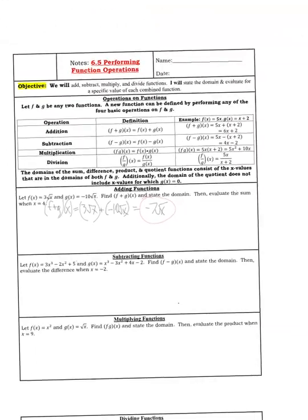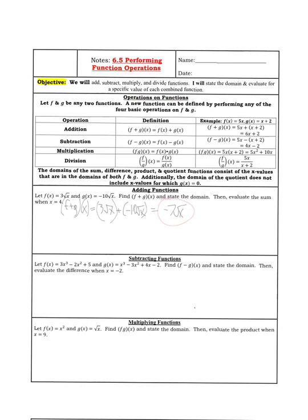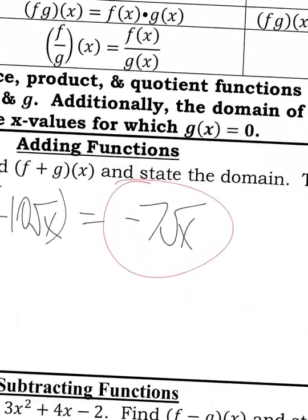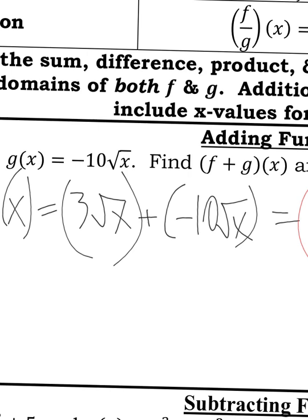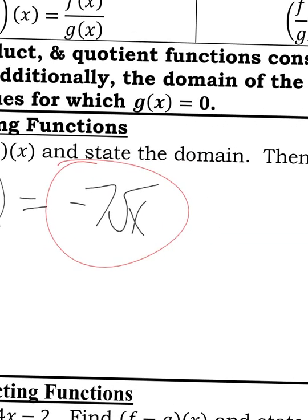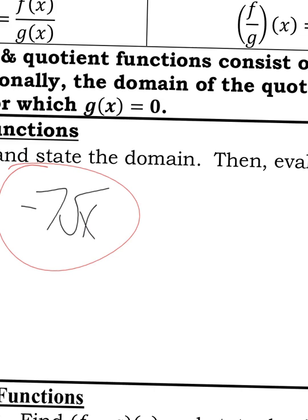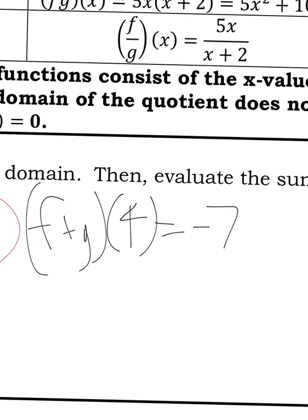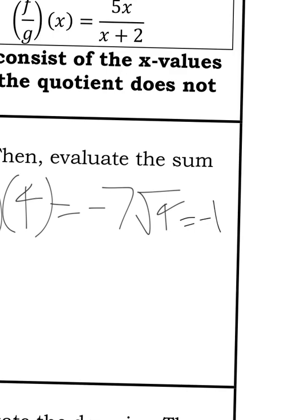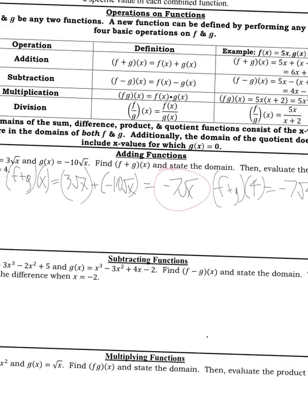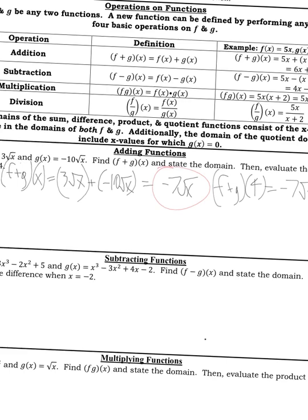When you're evaluating the sum when x equals 4, the easiest way is to just plug in 4 here. Or you could plug in 4 into your original two functions and then add the two answers together. But it's just easier to do it like this. So the notation would say f plus g of 4 equals negative 7 times the square root of 4. And the square root of 4 is 2. 2 times negative 7 is negative 14. Now when identifying the domain, I just recommend just graphing it.